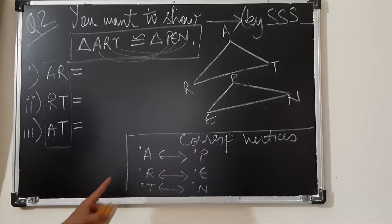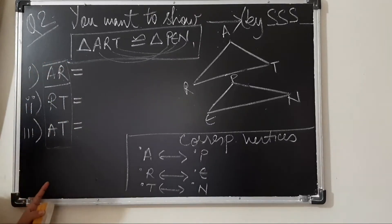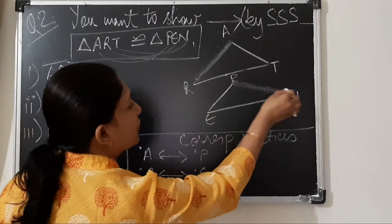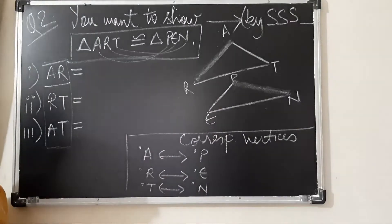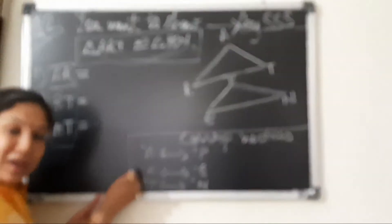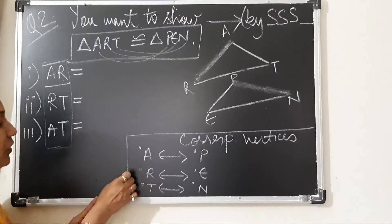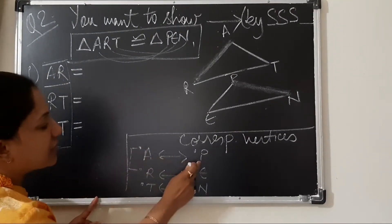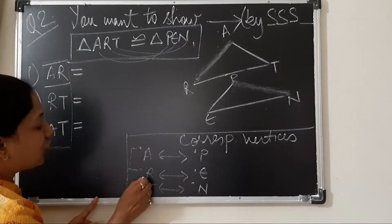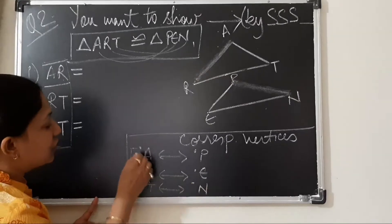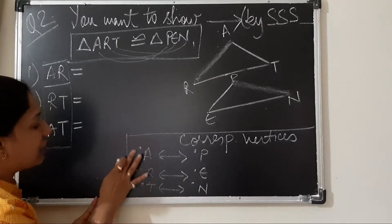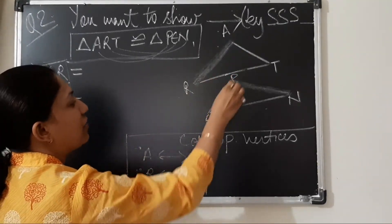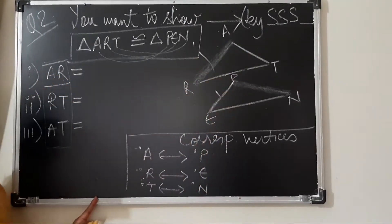Now let us move ahead. Which side are we talking about? Side AR. It could be the corresponding side on the other triangle. How will we know that? We take the help of the matching vertices. A is matching with P, and R is matching with E. So when you have side AR, you take it as side PE. Therefore, side AR and side PE are equal.